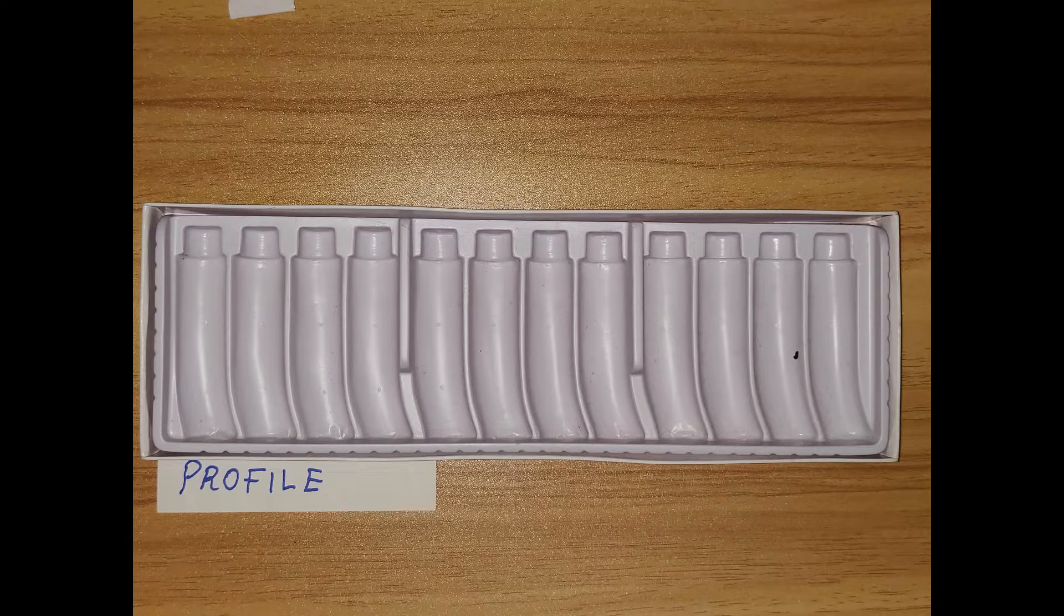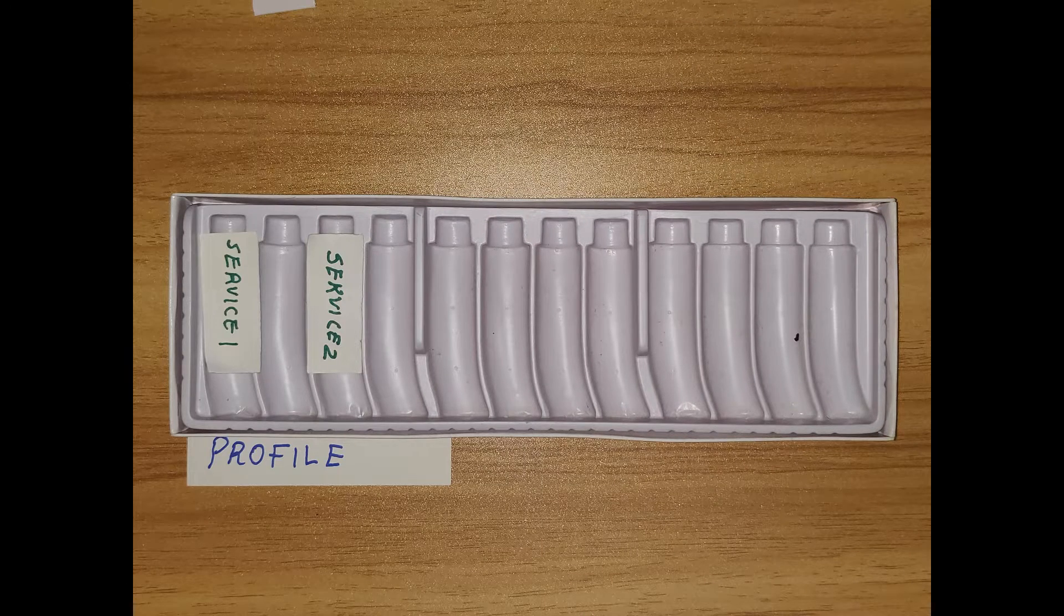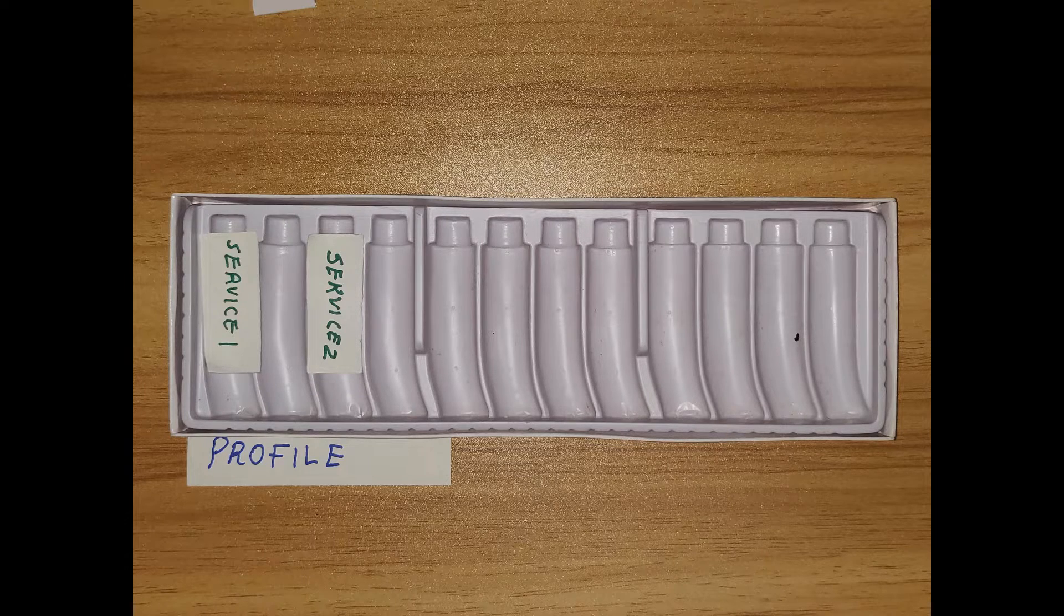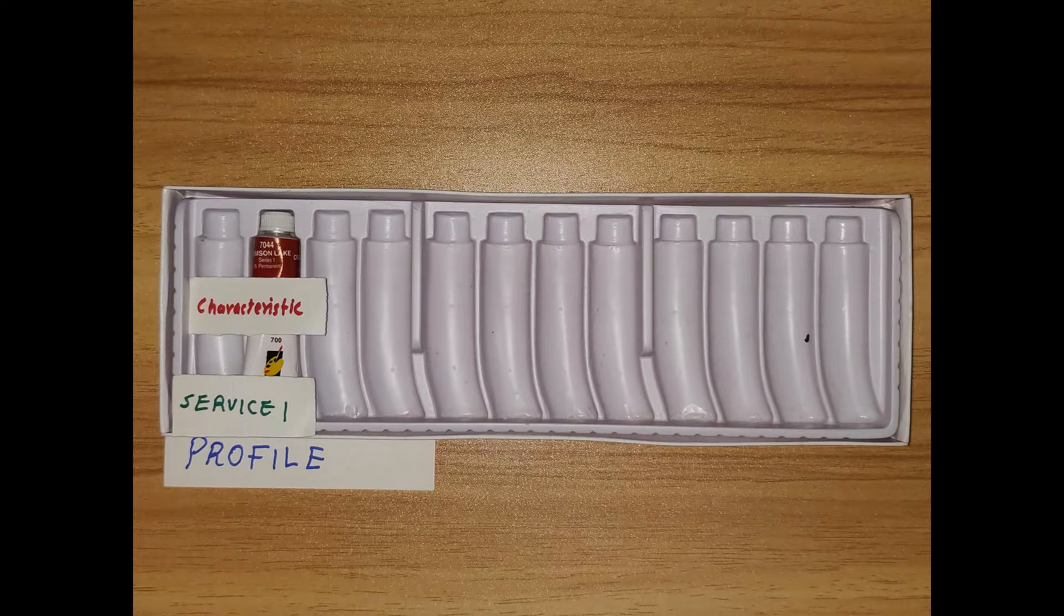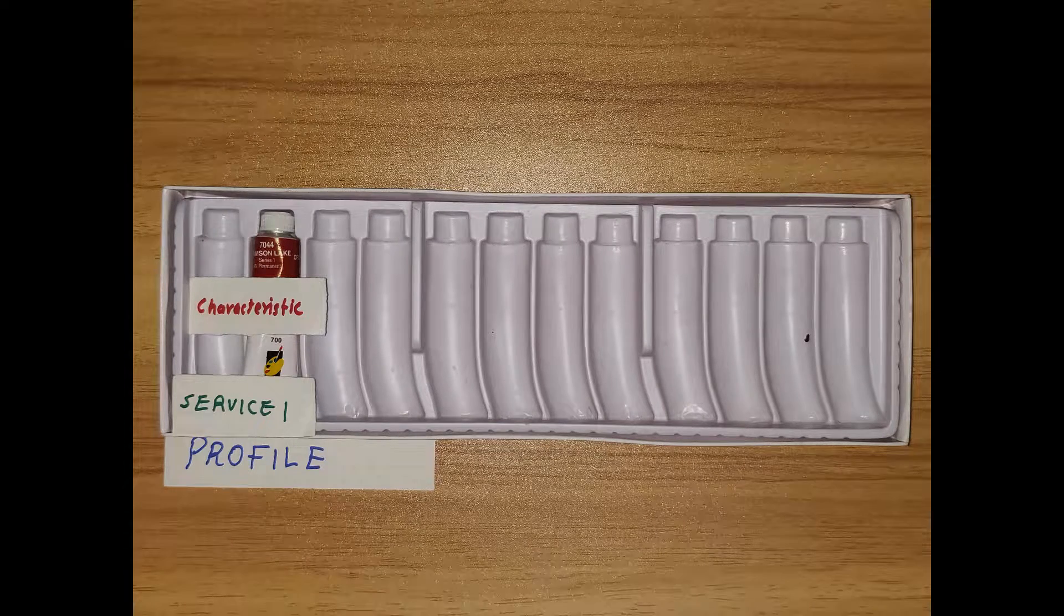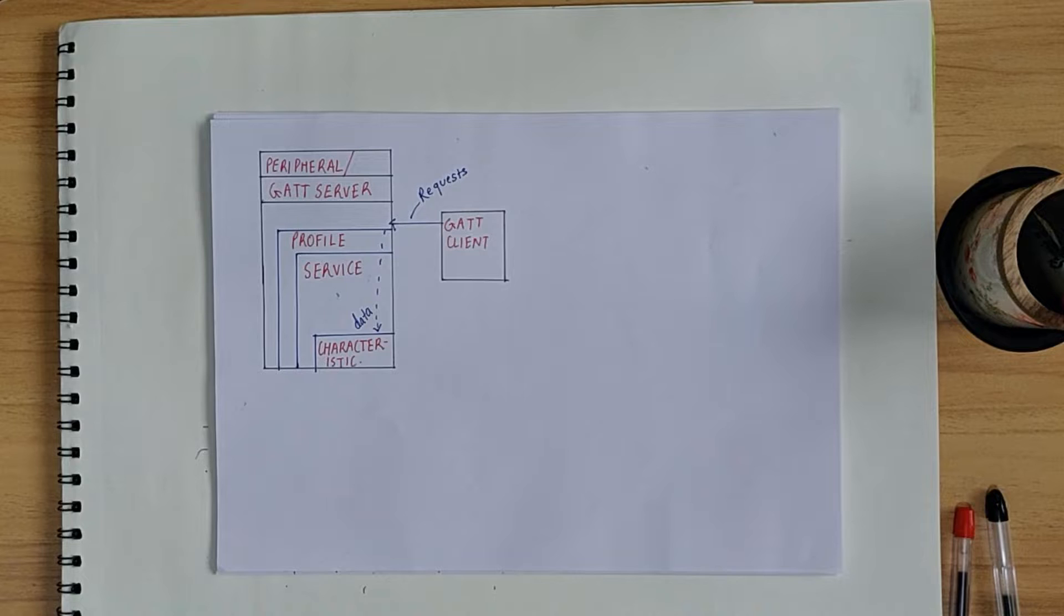So, this paint box is like a profile. The paint slots are services and these paint tubes are like characteristics which hold the actual color or paint or in other words, our data. So, we can clearly see that this type of structure makes sense because it makes sure that everything is in a standard location. You can easily locate any color that is required at a given time. In other words, the data is available in an organized structure which ensures ease of access. Basically, this structure gives client a roadmap that allows it to easily find whatever it requires on the server.